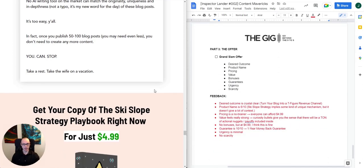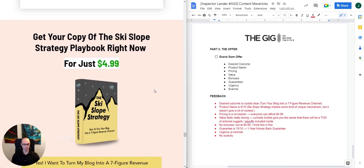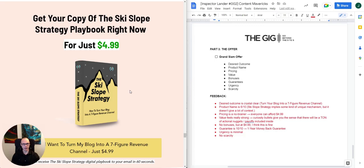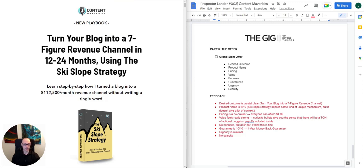The last thing we're going to look at is the offer. First criterion is desired outcome, and that is crystal clear here: we're going to turn your blog into a seven-figure revenue channel. It's really paid off well — you really get the sense that you're going to learn how to do it, and I think that's there in spades.